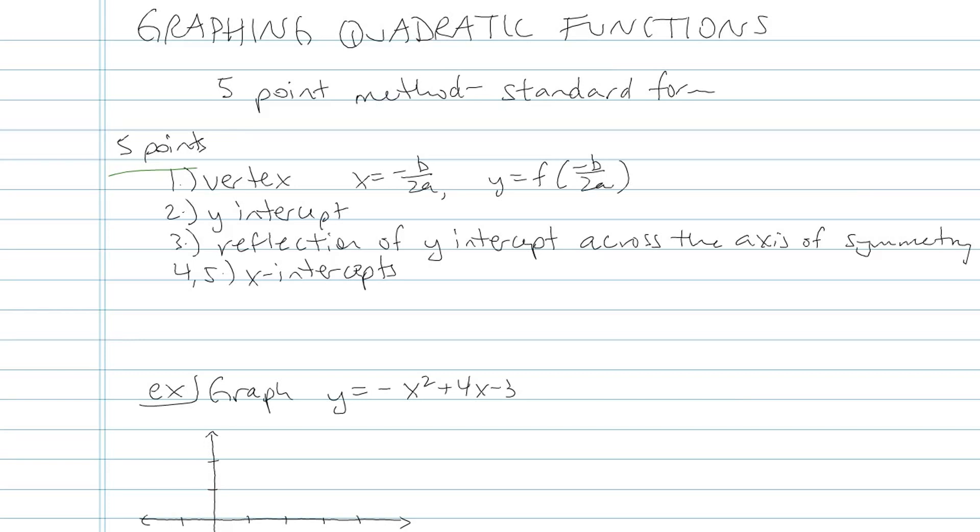The first point we're going to be finding is the vertex. The way to find the vertex is by doing x equals negative b over 2a, and then the corresponding y value happens when you plug that x value back into the equation. We're going to find next the y-intercept, which is always what you find when x is equal to 0. The third thing we're going to do is reflect that y-intercept across the axis of symmetry. The axis of symmetry is the vertical line that cuts the parabola in half, and the equation comes from x equals negative b over 2a. And then the last thing we're going to look for are the x-intercepts. You can find those by factoring, which is what we're going to do in this case. Sometimes you'll need to use the quadratic formula. Sometimes you can complete the square.